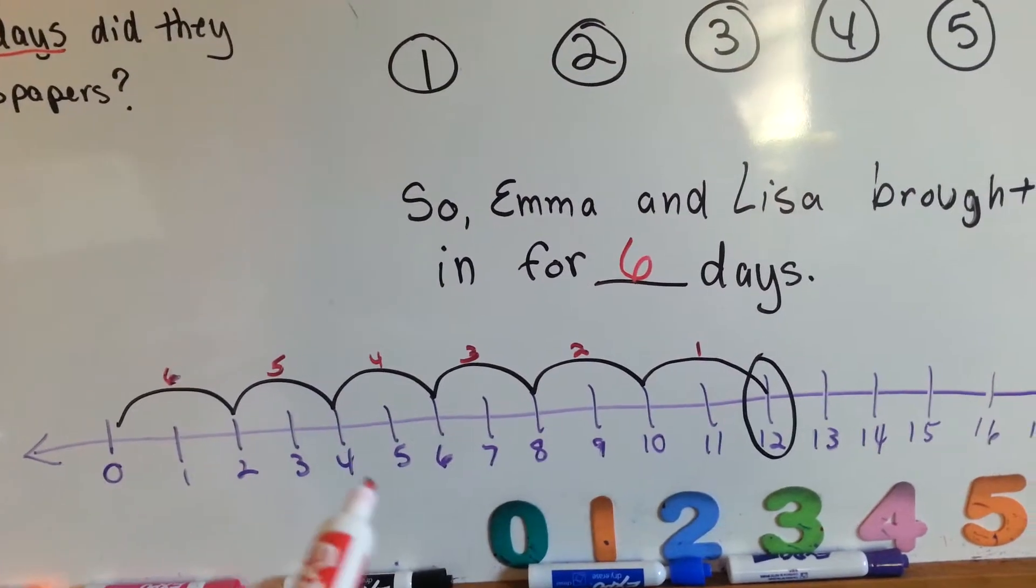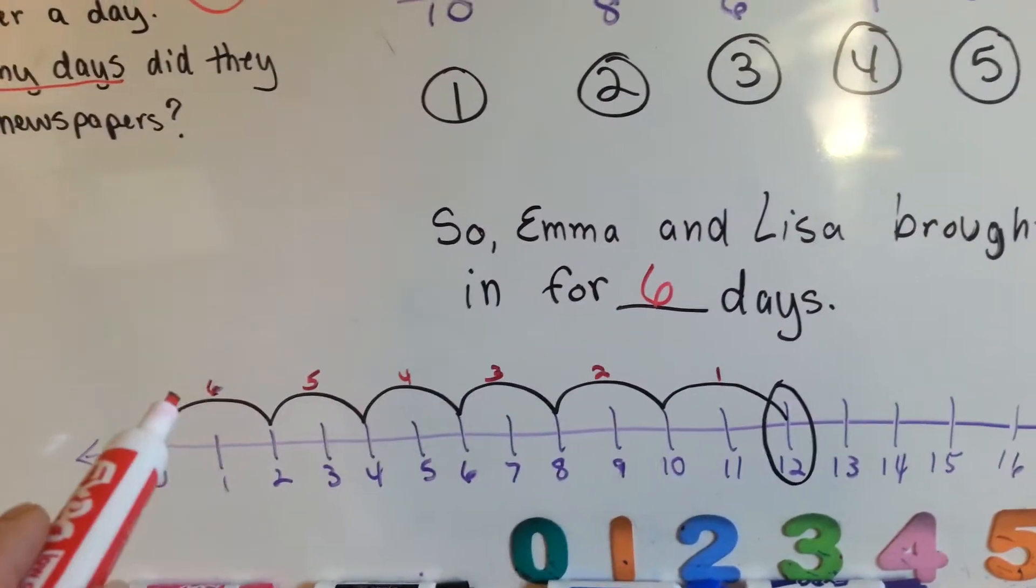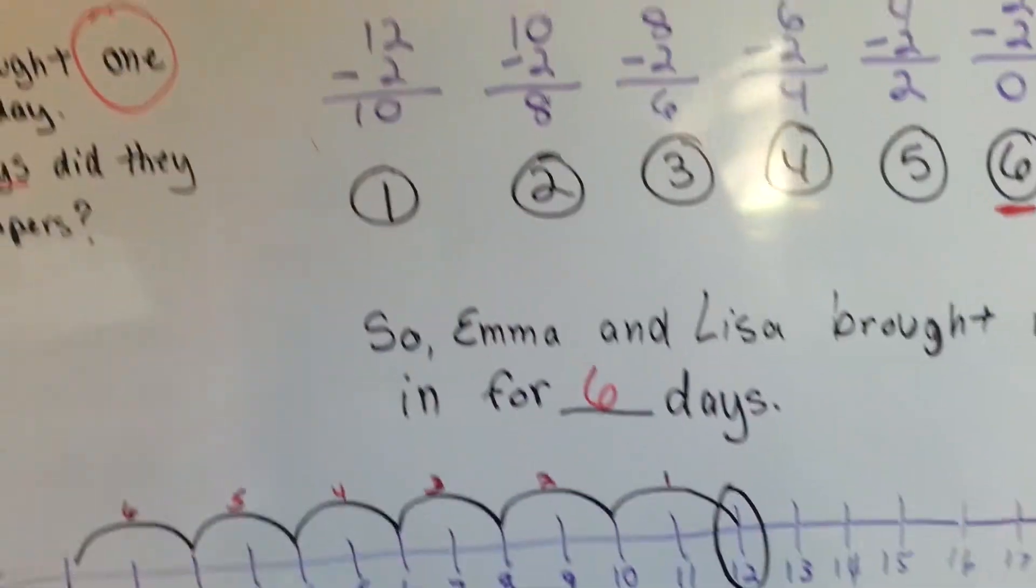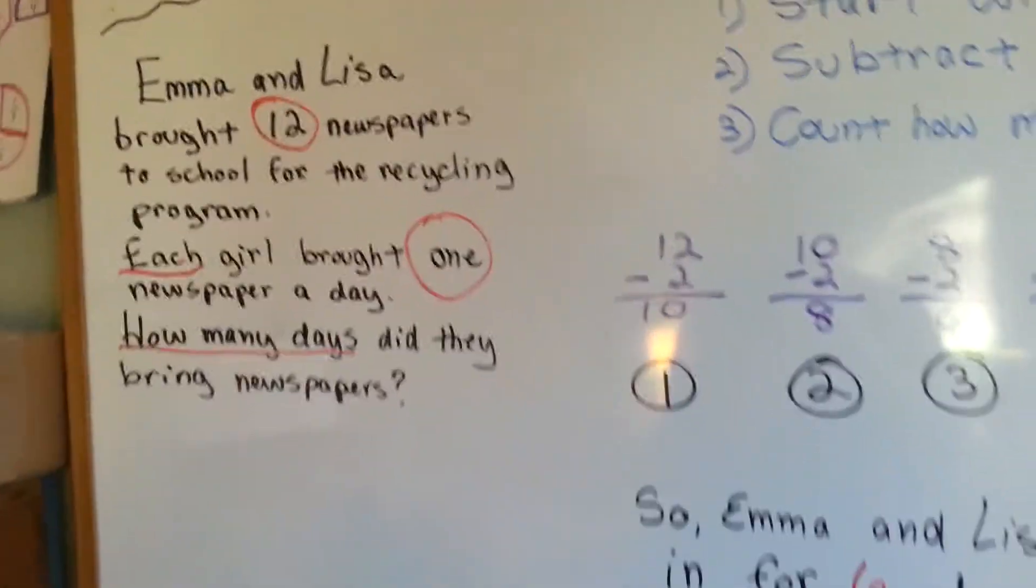Zero, two, four, six, eight, ten, twelve. And that was six bumps up here, so that's six days. So it took six days for them to bring the twelve newspapers in.